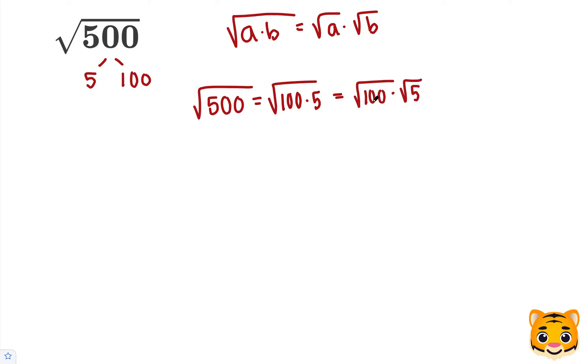The square root of 100 is going to be a whole number because 100 is a perfect square. 10 squared or 10 times 10 is equal to 100, meaning the square root of 100 is equal to 10.